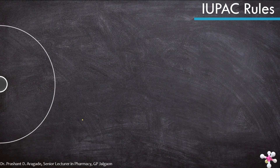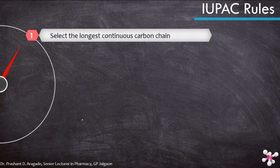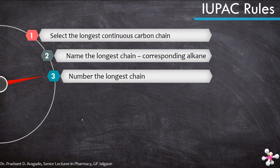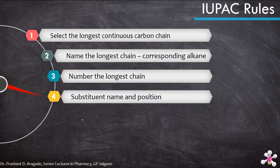Let's see the rules for naming alkyl halides. Rule 1: select the longest continuous carbon chain containing the halogen atom. Rule 2: give a name to the longest carbon chain depending on the number of carbon atoms present, using the corresponding alkane name. Rule 3: number the longest chain such that the substituent-carrying carbon atom has the lowest possible number. Rule 4: prefix the position number and name of substituents onto the parent name of the continuous carbon chain. Remember that halogen acts as a substituent.